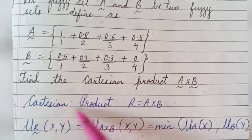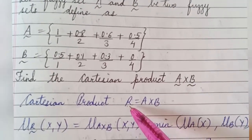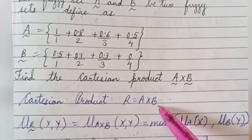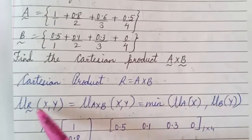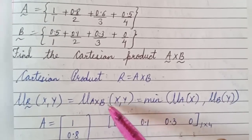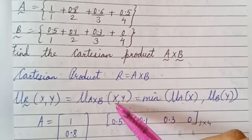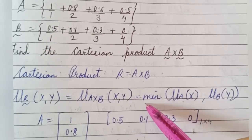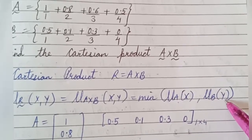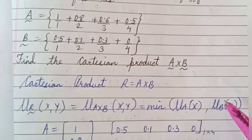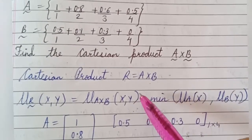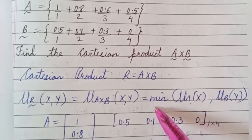The Cartesian product of A cross B will be relation R, written as R = A × B. It can also be written as μ_R(x, y) = μ_{A×B}(x, y) = min(μ_A(x), μ_B(y)). That is, to find the Cartesian product of two sets, compare elements from both sets and select the minimum.